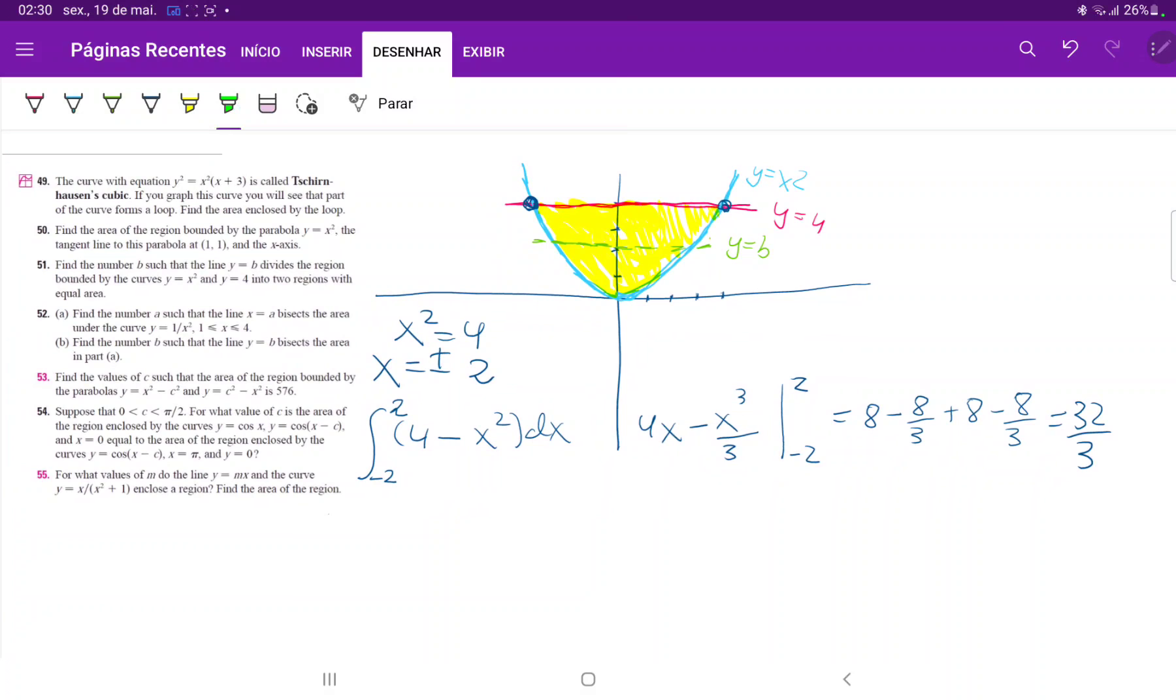Now we want to find where this line is going to give us half the area. So let's set up this integral. Before we can set up this integral, we need to find these points of intersection. Let's set these curves equal to each other. So x squared equals b, and thus x equals plus or minus square root of b.